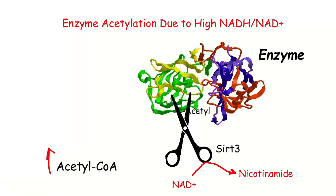Furthermore, as the Sirtuins do their job, they convert the NAD+ to something called nicotinamide. So as they're removing the acetyl groups, they're actually adding to the problem of lacking NAD+. You see this downward spiral: lack of NAD+ in the first place led to high acetyl-CoA, which led to more acetylation, which led to more need for Sirt1 — but the extra use of Sirt1 continues that downward spiral of using up the NAD+ supplies.